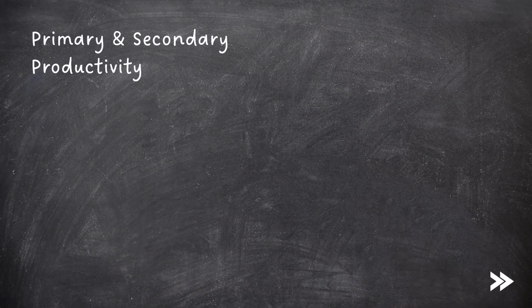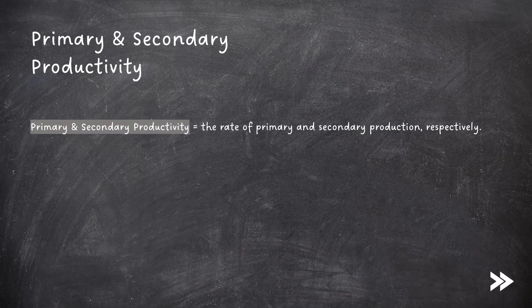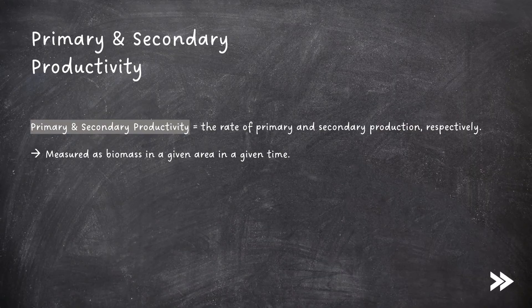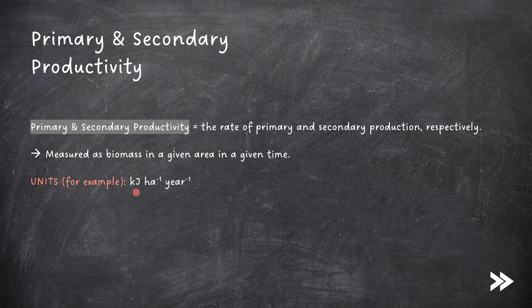Finally, we have primary and secondary productivity, which is the rate of primary and secondary production respectively. It is measured as biomass in a given area in a given time. An example of the units used to measure primary and secondary productivity would be kilojoules per hectare per year — kilojoules being a measurement of the biomass, hectares being the area, and a year being the time frame.